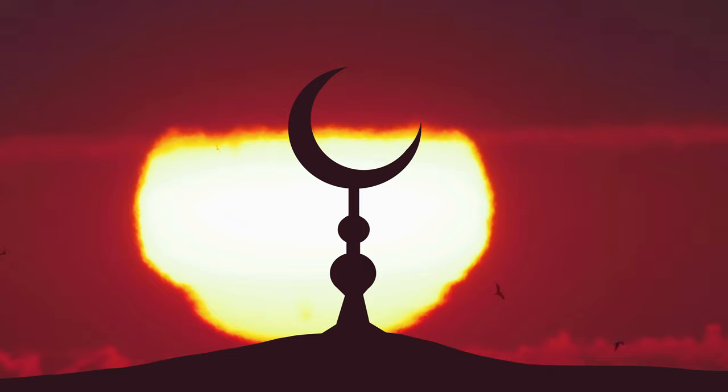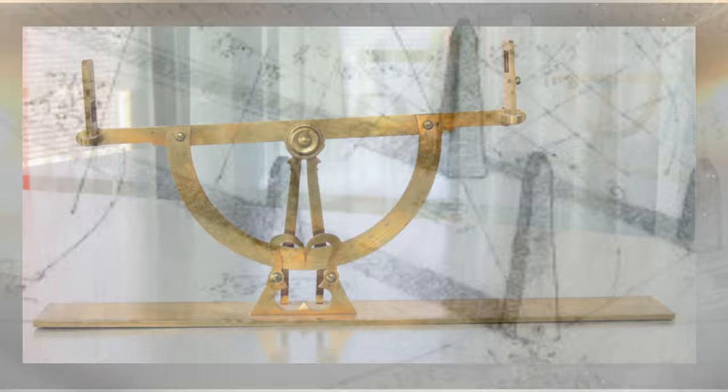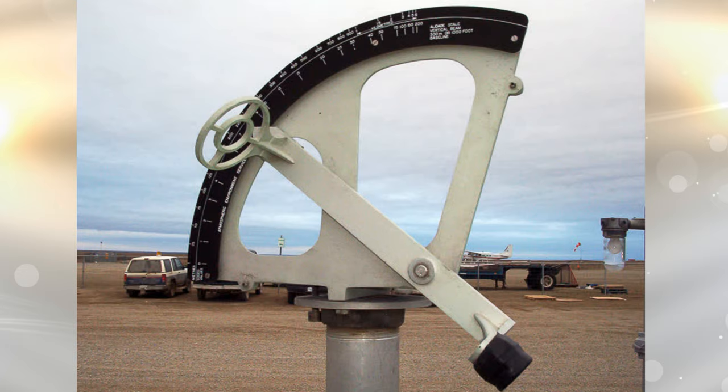The shadow square, an instrument used to determine the linear height of an object in conjunction with the Alledate for angular observation, was also invented by Al-Khawarizmi in the 9th century in Baghdad.